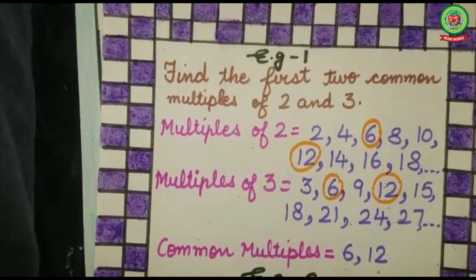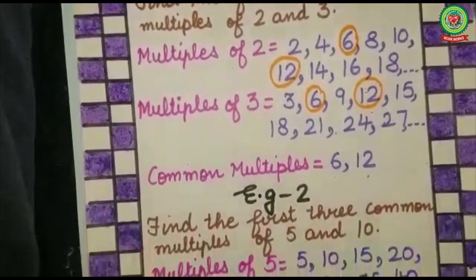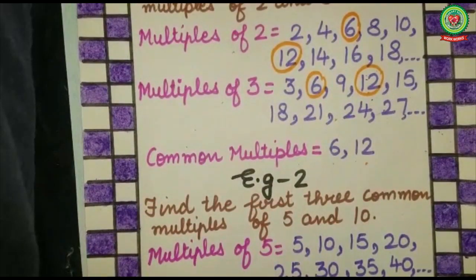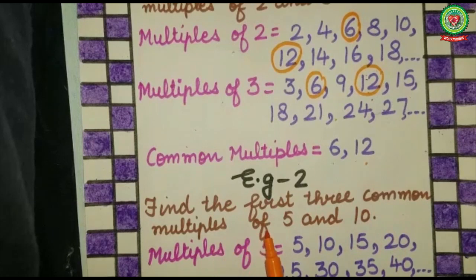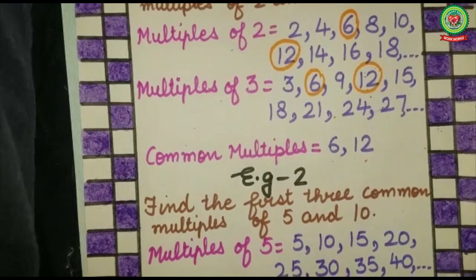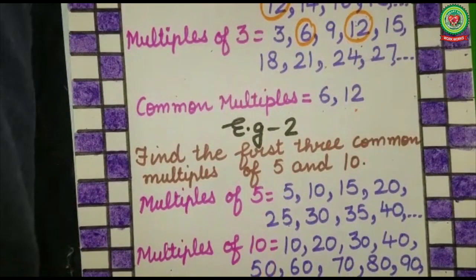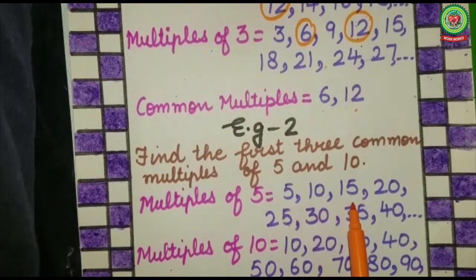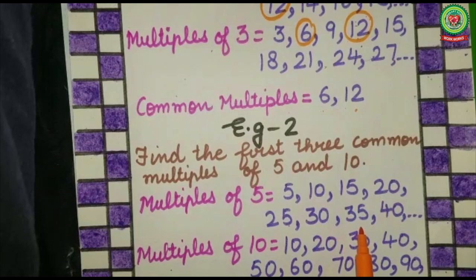Let's take one more example. Example number two: find the first three common multiples of five and ten. I have to find three common multiples, so first let's write down the multiples of five. Multiples of five are: five, ten, fifteen, twenty, twenty-five, thirty, thirty-five, forty, and so on.